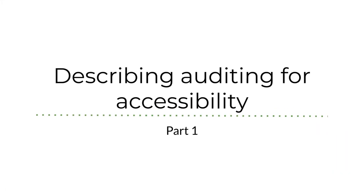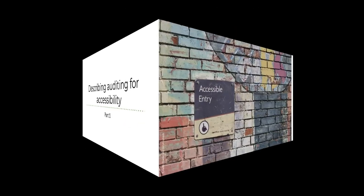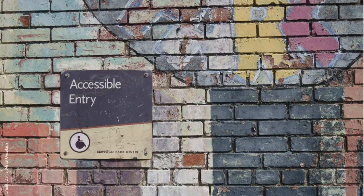So first up is describing what it means to audit for content accessibility. Accessibility is in many ways about usability, but focused on specific groups of users with distinct needs. These users have often been ignored when companies publish content.